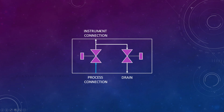Once completely drained, you can safely remove the instrument and take it to your laboratory for calibration or any other work. Once you finish, the process is repeated: connect the instrument, connect the process medium, drain the air bubbles, and so on. This is how a two-way manifold valve functions. Thank you friends — see you in the next video.